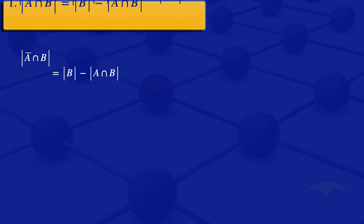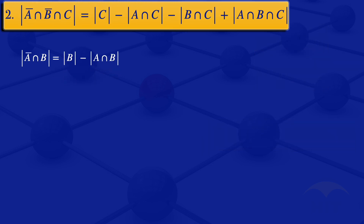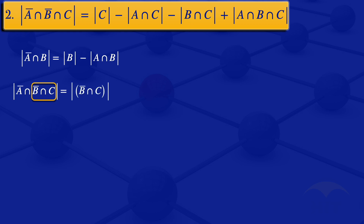Moving on to question number two. On the left hand side we now have the cardinality of A complement intersection B complement intersection C. What we can do is use the result just obtained, but replace B with B complement intersection C. If we do that, our expression becomes the cardinality of B complement intersection C minus the cardinality of A intersection B complement intersection C.